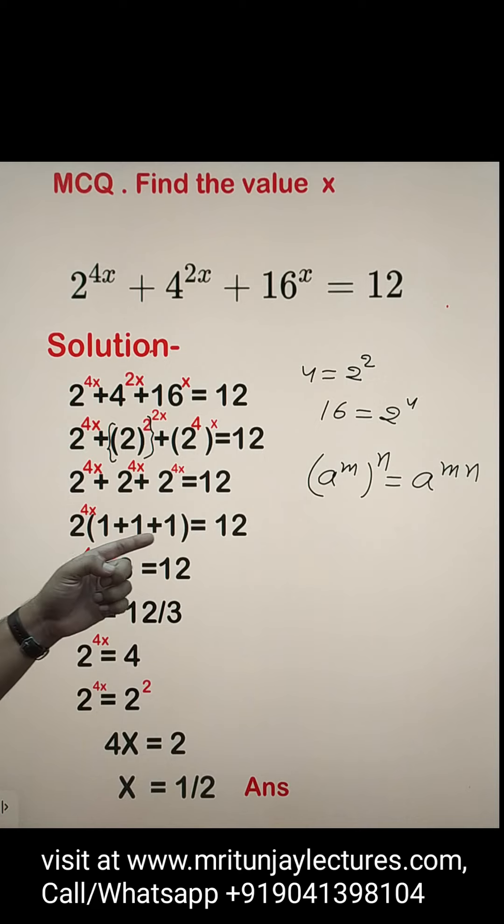Now 2 to power 4x is common, then 1 plus 1 plus 1, this will be equal to 12. So 2 to power 4x into 3, this will be equal to 12. So 2 to power 4x, this will be equal to 12 by 3.